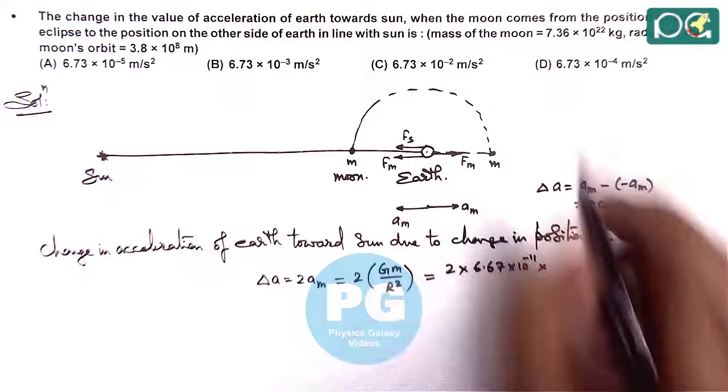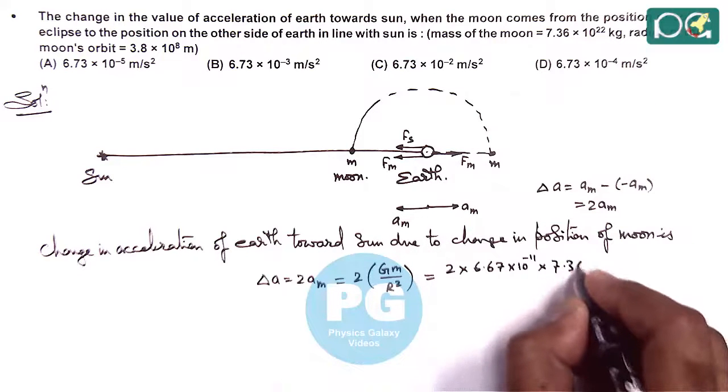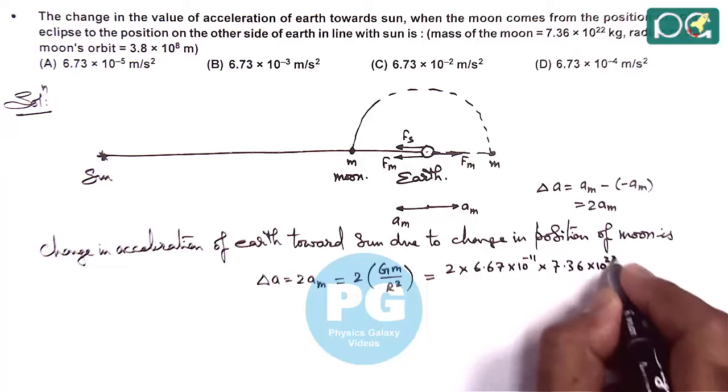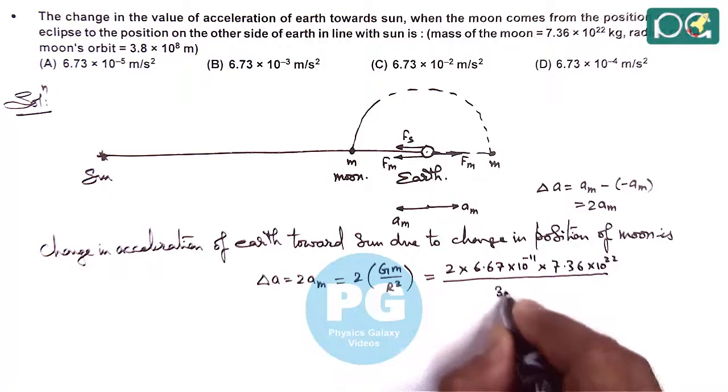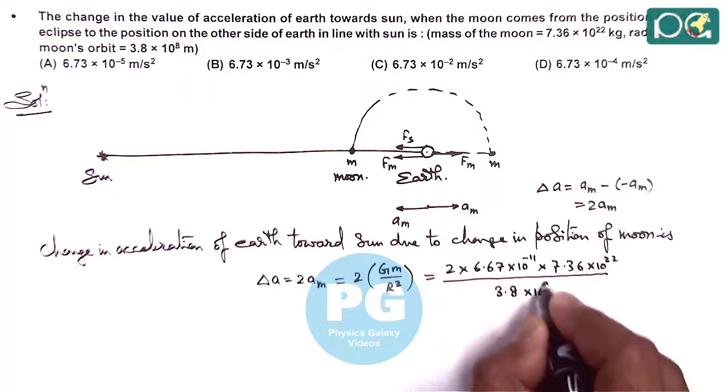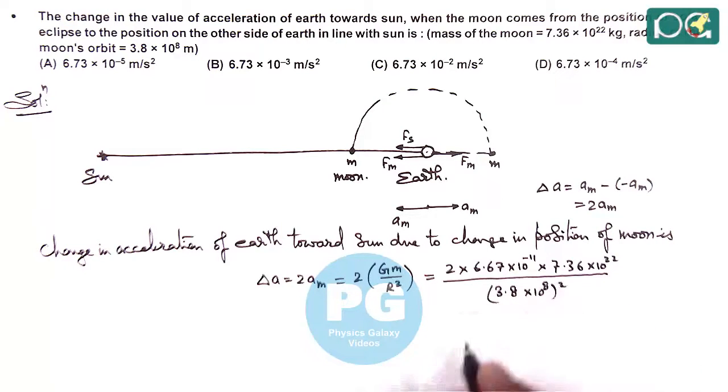Mass is given to us as 7.36 × 10^22, divided by radius of moon's orbit is 3.8 × 10^8 whole square. So numerically...